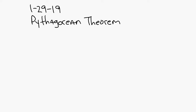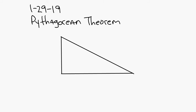Let's start off with a right triangle and talk about some of the terms you need to be familiar with. In a right triangle, you've got one 90-degree angle. The two sides of the triangle that make up that 90-degree angle are called legs. The side that is across from the 90-degree angle is called the hypotenuse.